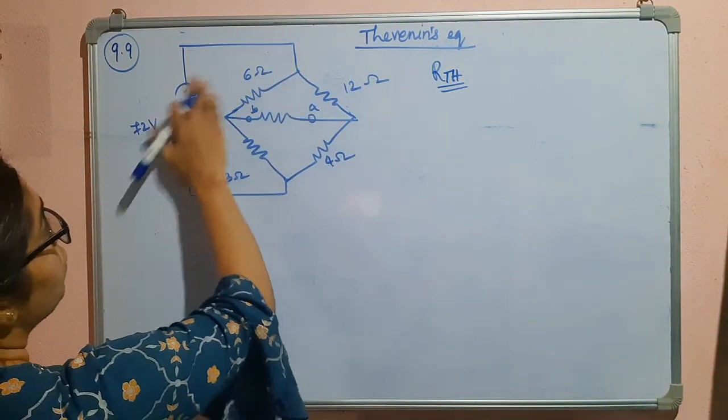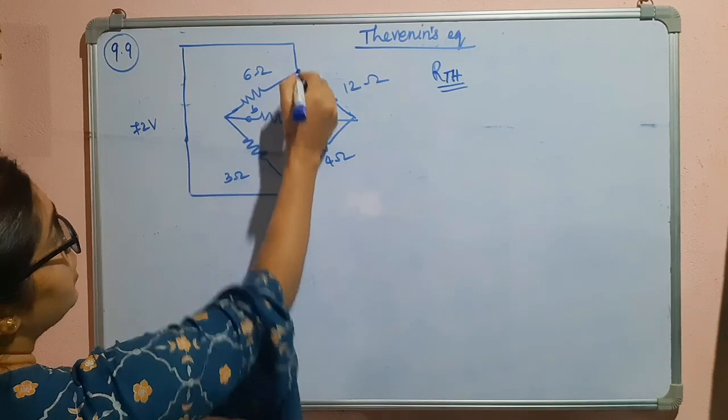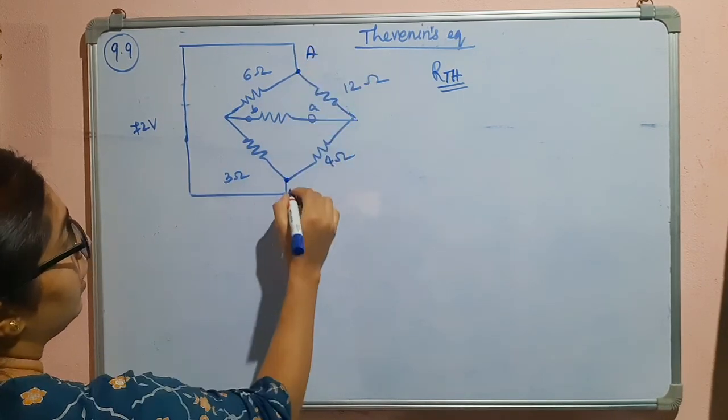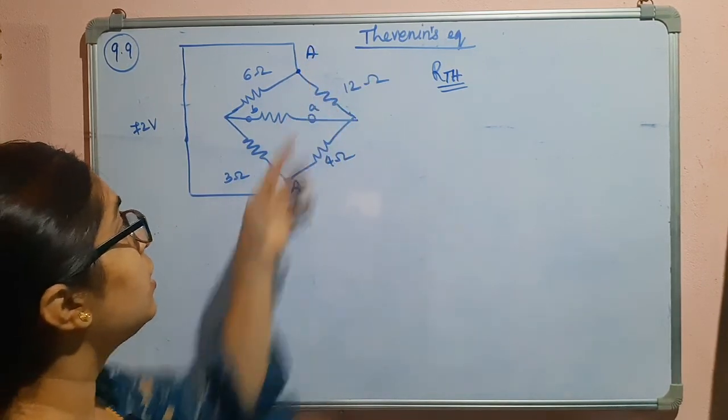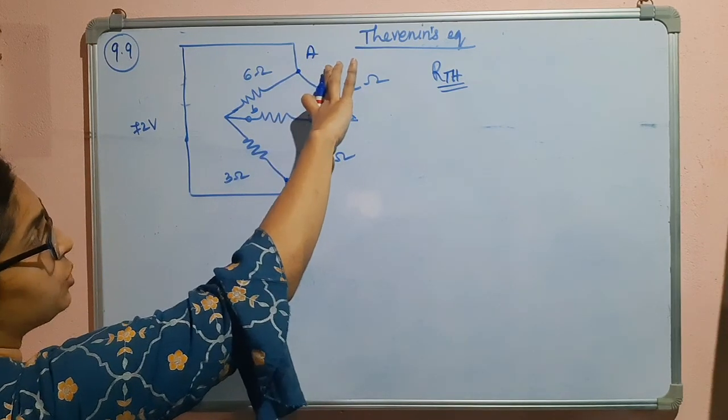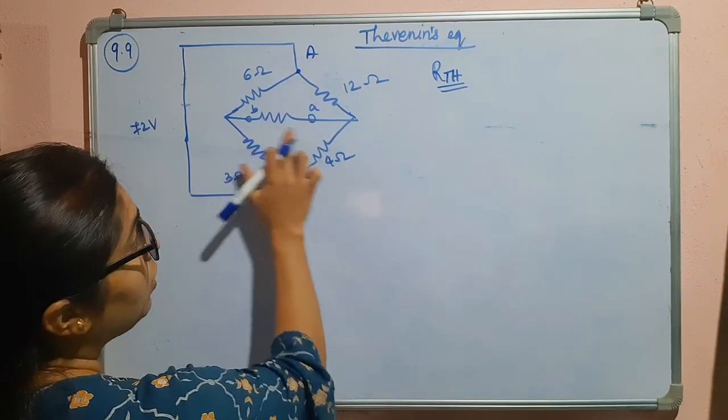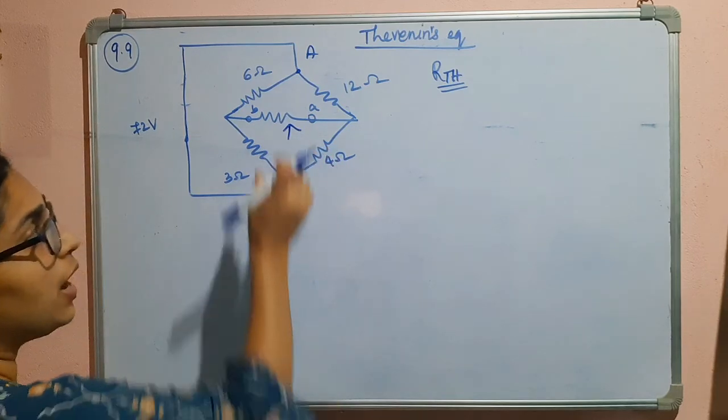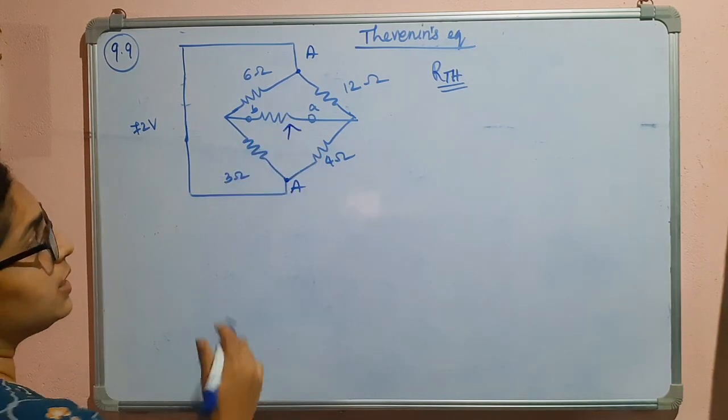After shorting this voltage source what happens is these both will be having the same potentials. Now to find out the Thevenin's equivalent, from this position we have to remove this resistor.